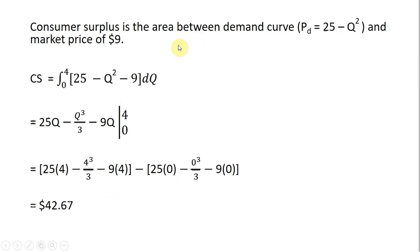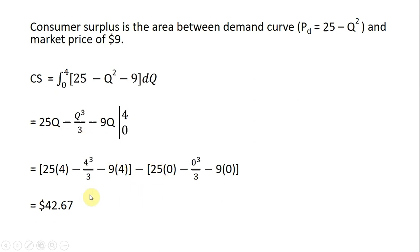Consumer surplus is the area between the height of the demand curve and the market price of $9. Consumers buy 4 units, so we evaluate the definite integral from 0 to 4. The inverse demand is 25 minus Q squared, and 9 represents the market price. Getting the antiderivatives and evaluating at 4 and subtracting the result at 0, consumer surplus is $42.67.